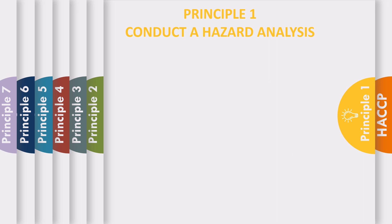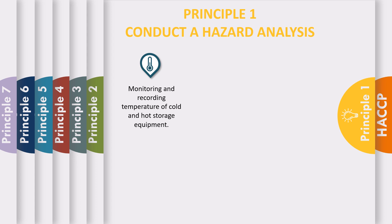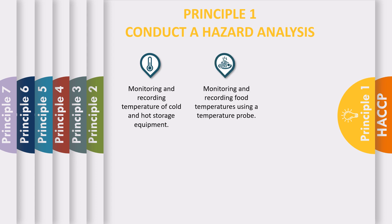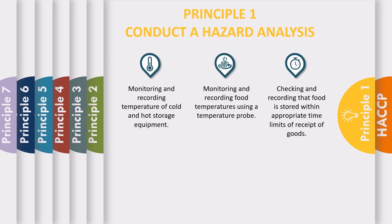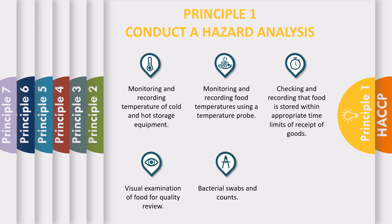You can identify food hazards by monitoring and recording temperature of cold and hot storage equipment, monitoring and recording food temperatures using a temperature probe, checking and recording that food is stored within appropriate time limits of receipt of goods, visual examination of food for quality review, bacterial swabs and counts, and chemical tests.